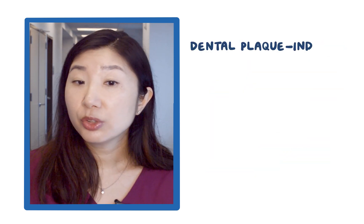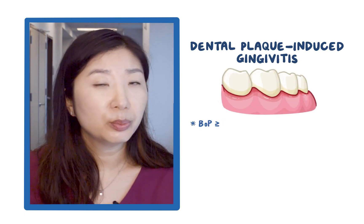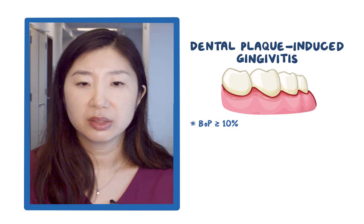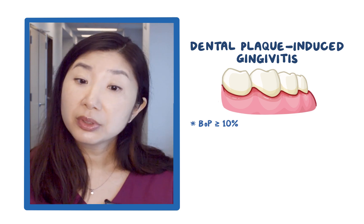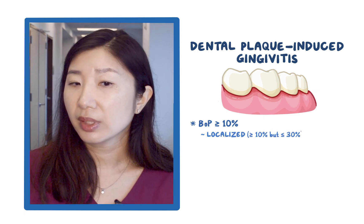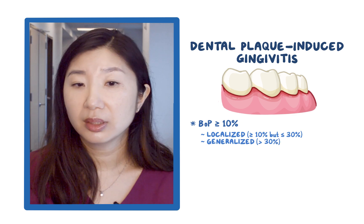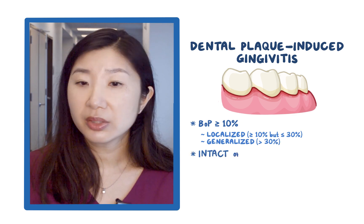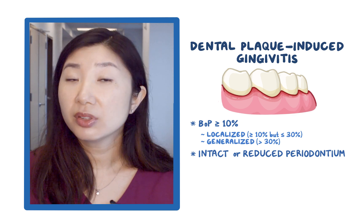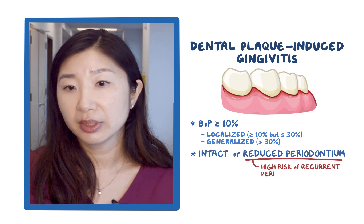Plaque-induced gingivitis is gingival inflammation defined by bleeding on probing of 10% or more without active underlying destruction. Gingivitis can be further described as localized, more than 10% but less than 30%, or generalized, which is more than 30%. It can be on an intact periodontium or on a reduced periodontium. Patients with gingivitis on a reduced periodontium have a higher risk of recurrent periodontitis.